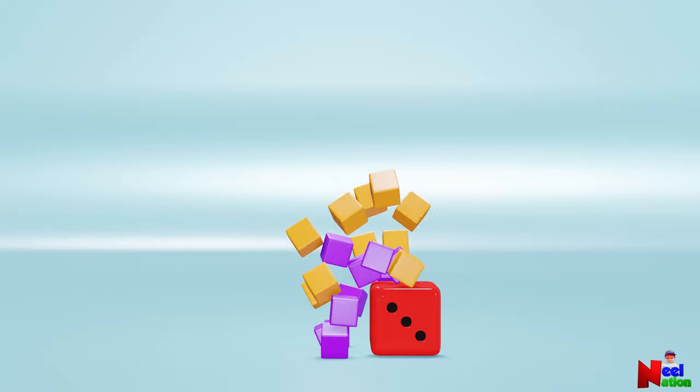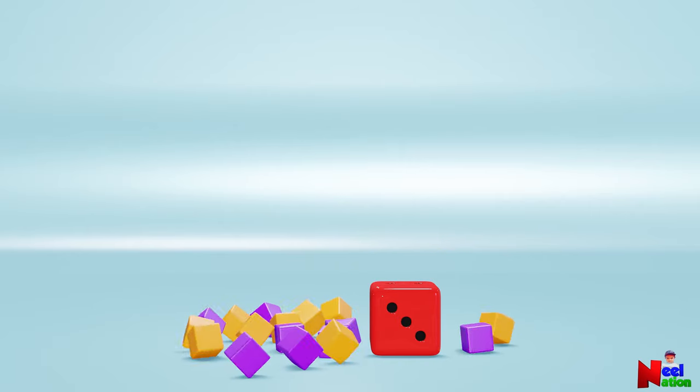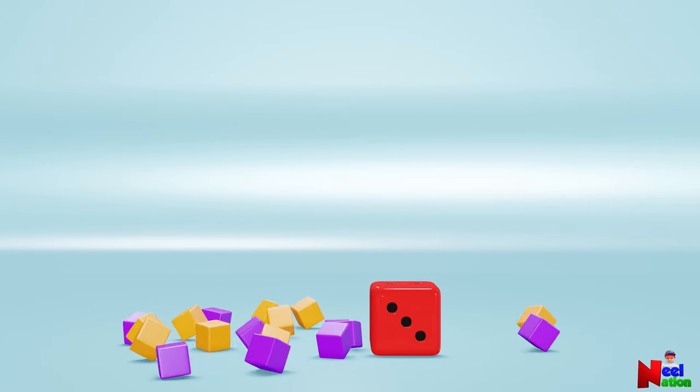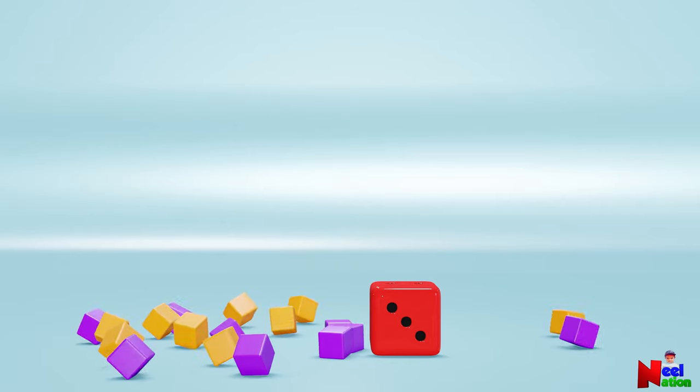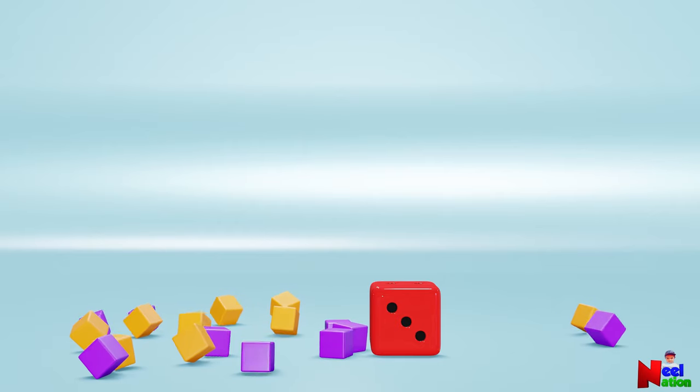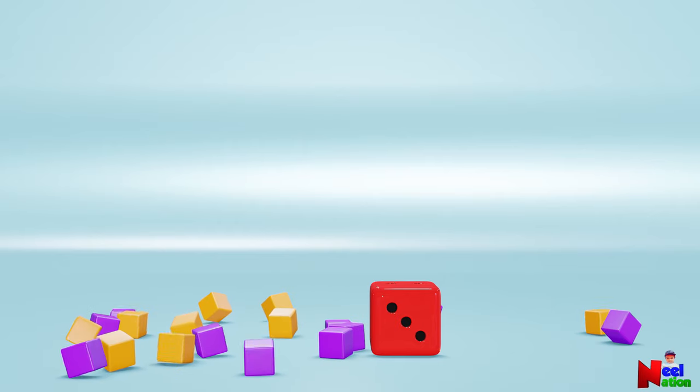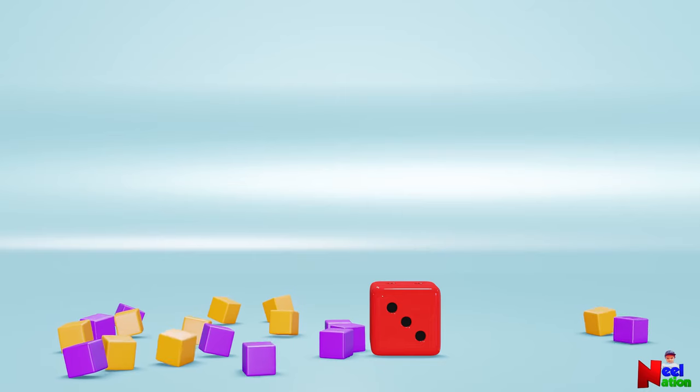Now, let's play a fun dice game and let's build short and tall towers. Here, you have a dice and some cubes. You have some yellow cubes and some purple cubes. Let's roll the dice two times for each color. Okay. Let's roll the dice.